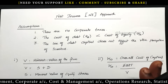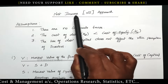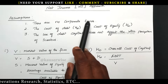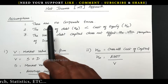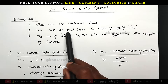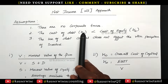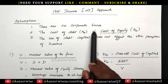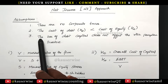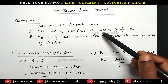Before we see the numerical problem, let us try to understand the basic concepts about the net income approach. In the net income approach there are a few assumptions. Number one: there are no corporate taxes, so corporate tax is nil. The second one is the cost of debt is lesser than cost of equity — KD refers to cost of debt and KE refers to cost of equity. The third assumption is that the use of debt capital does not affect the risk perception of investors.